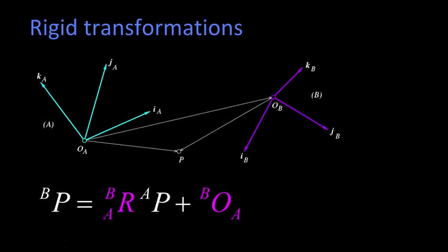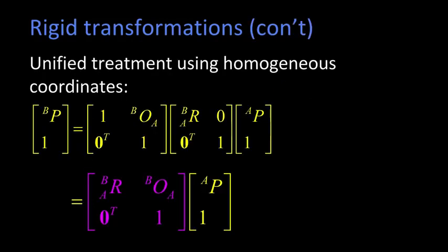So now, we can do the total rigid transformation. If I have some point in the A system, I first have to rotate to get aligned in the B system. And then I have to offset it by whatever the offset of the A system in the B system is. That's what this equation says.